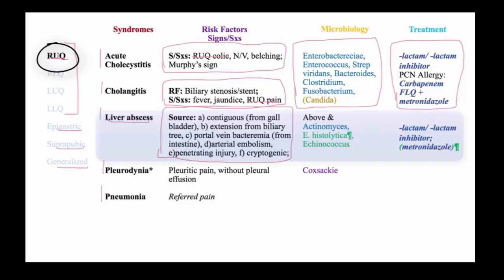Penetrating injury will also predispose to a liver abscess from trauma, and then there are occult causes for which the mechanism is not known. The pathogens of liver abscess depend on the source from which they arise. If it's extending from the gallbladder, it's the same microbiology as described for gallbladder and cholangitis.